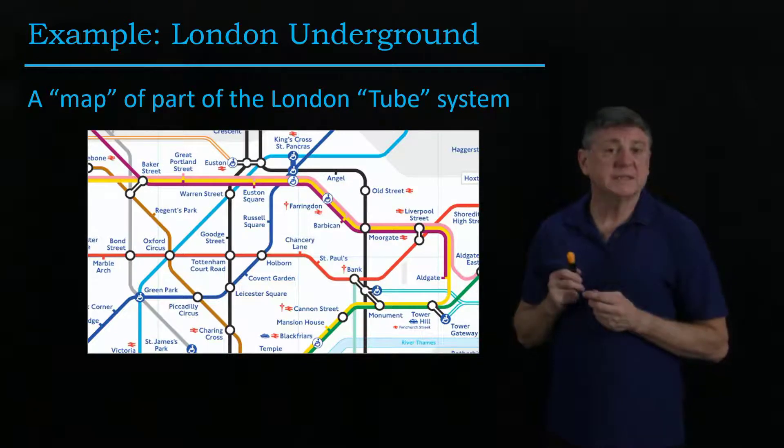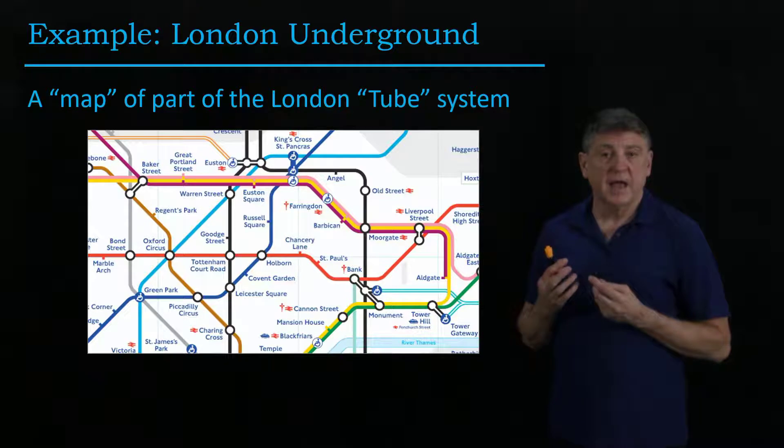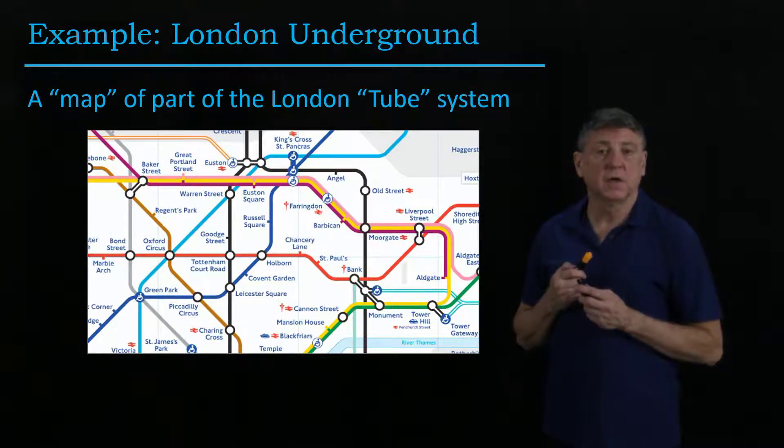Here, the circles represent stations, and for us those are vertices in a graph, and the colored lines represent physical rails that trains run along, and those will be edges in our graph.